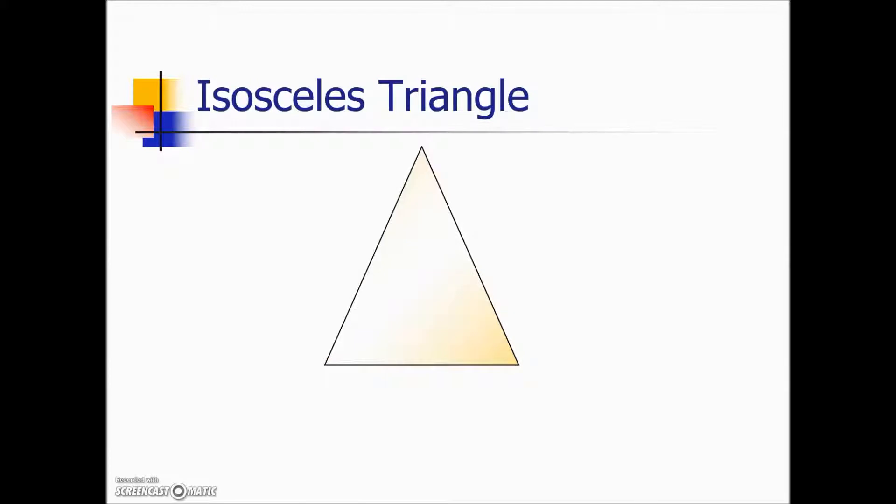The next triangle we'll look at is an isosceles where the base angles are equal and because the base angles are equal, the sides opposite those base angles are equal. When you have an isosceles triangle, we have two sides that are exactly the same length and the angles opposite those two sides, which are called base angles, are equal.